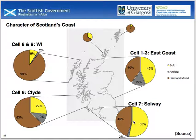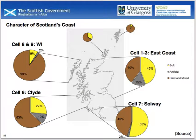Regarding the character of Scotland's coastline: different sections have been analysed and compared, and you can identify areas of rocky shore. For example, along the east coast on cells 1 to 3, 40% is composed of resilient rocky shore, 15% is artificial, and 45% is soft. These proportions vary around the coast as we would expect.